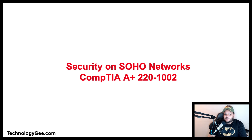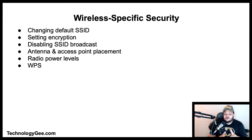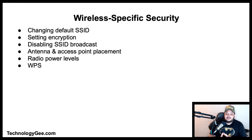What up everybody, this is your boy Tech G back with another video to help you successfully pass the CompTIA A+ 220-1002 examination. In this video you're going to learn about security on SOHO wireless and wired networks. In the following sections we are going to be discussing wireless-specific security such as changing the default SSID, setting encryption, disabling SSID broadcast, antenna and access point placement, radio power levels, and WPS.